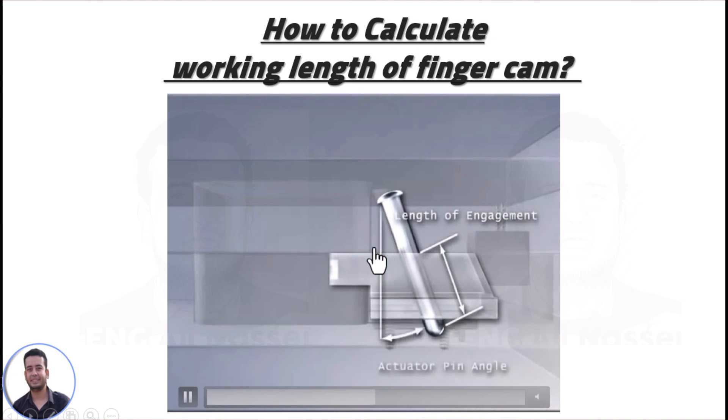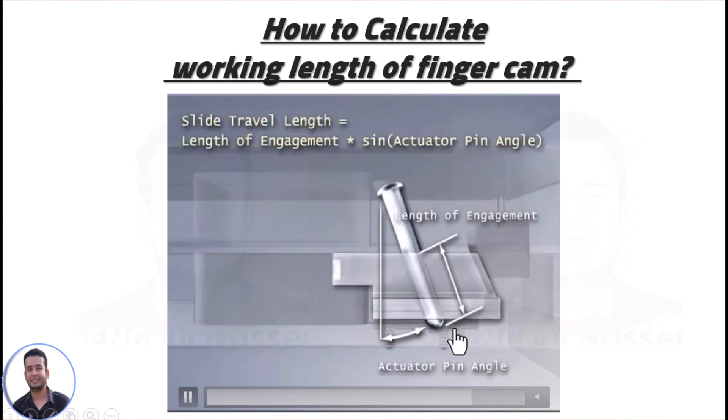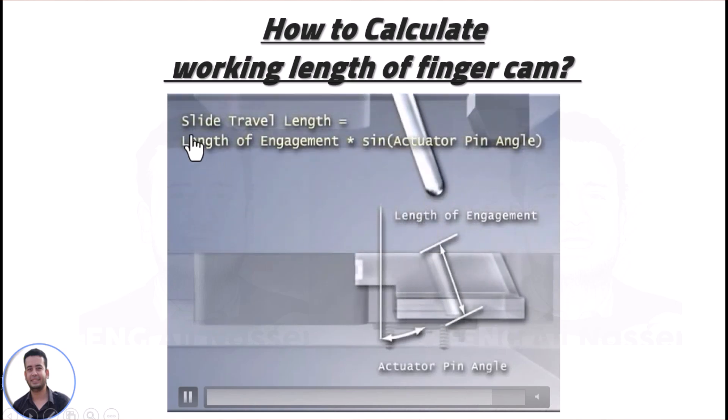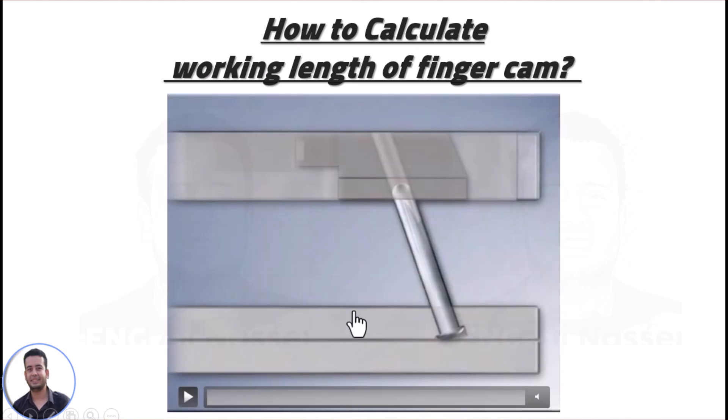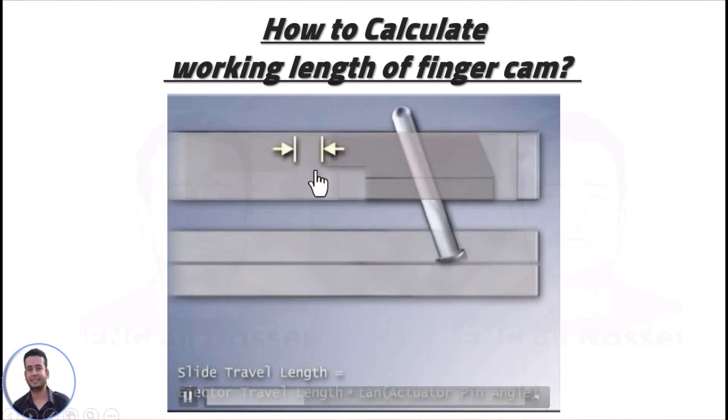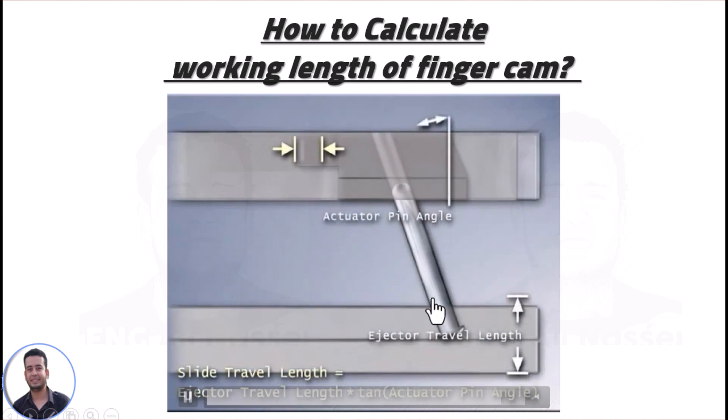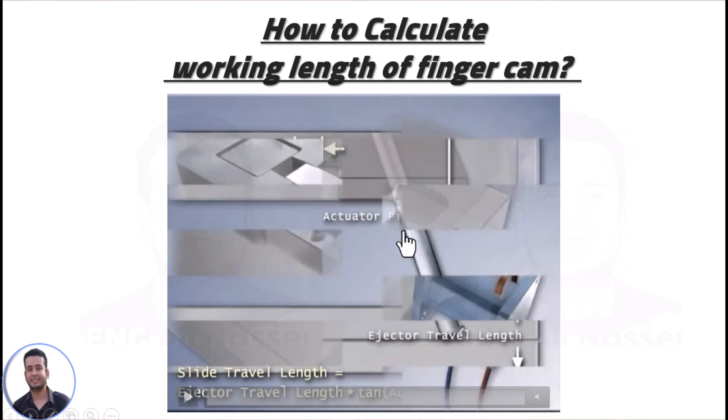The angle of the angular bend is usually between 10 to 25 degrees. Also, the length of engagement depends on slide travel length. Let me show what is meant by slide travel - this is the travel of the slide. By this length, we can calculate the actual length of cam and bin.